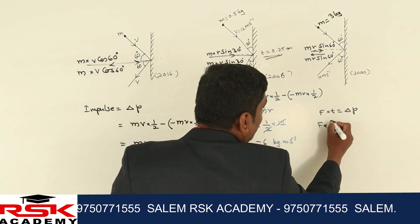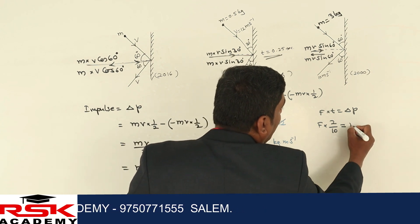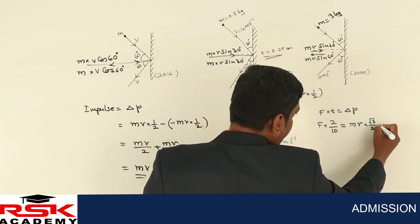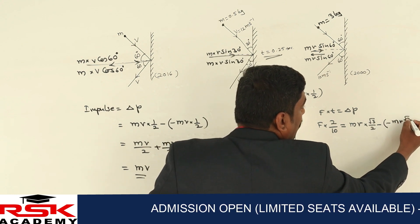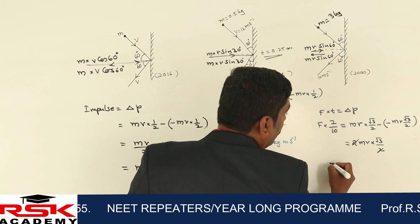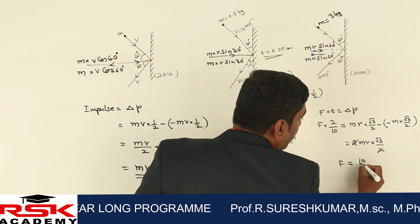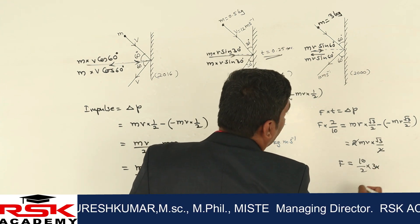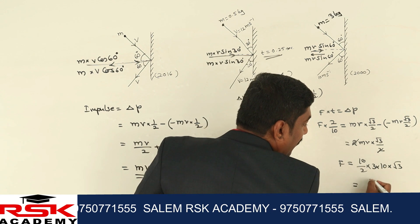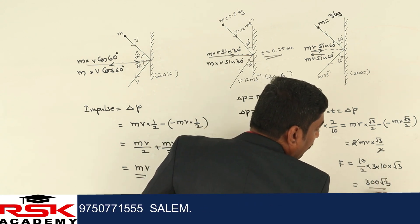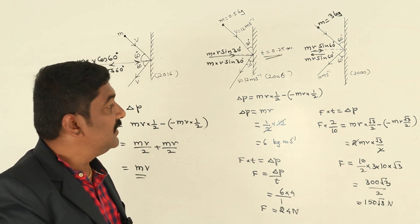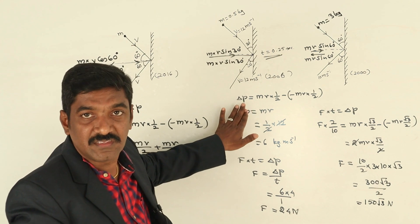The impact time was 0.2 seconds. The force exerted on the wall: the change in momentum equals mv sin60, and sin60 value is root 3 by 2, minus of minus mv times root 3 by 2, giving 2mv times root 3 by 2, with the 2 cancelling. Force F equals delta P divided by t, which is mass 3 kg times velocity 10 m/s times root 3, divided by 0.2. So 10 times 10 is 100, then 300 root 3 divided by 2, giving 150 root 3 newton.